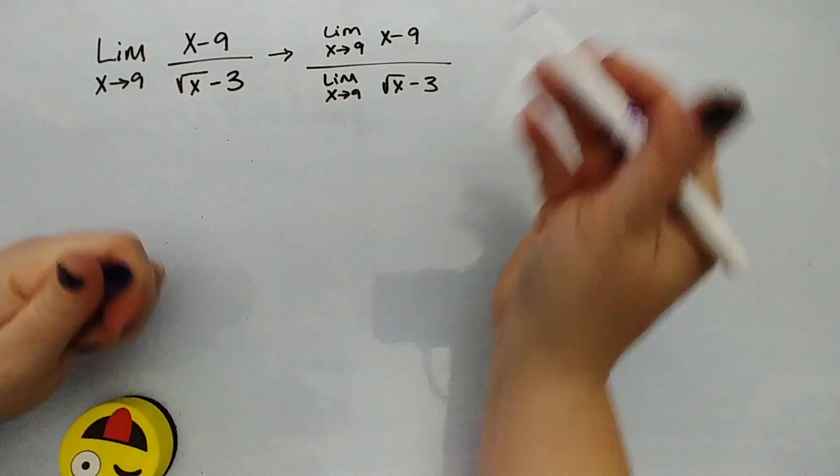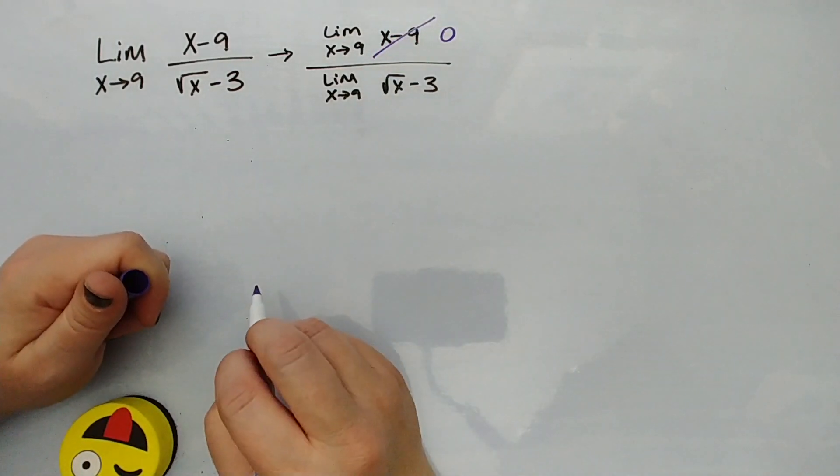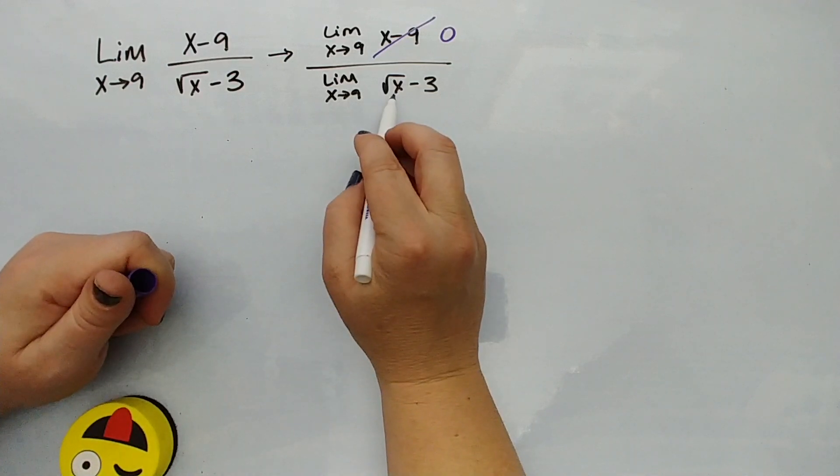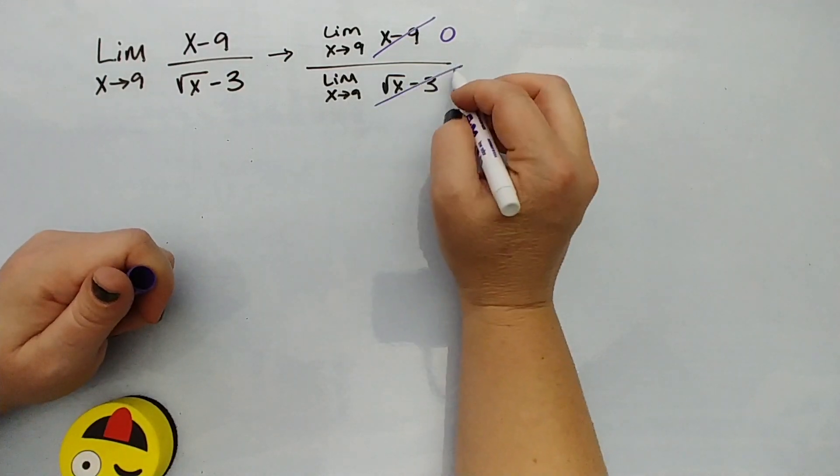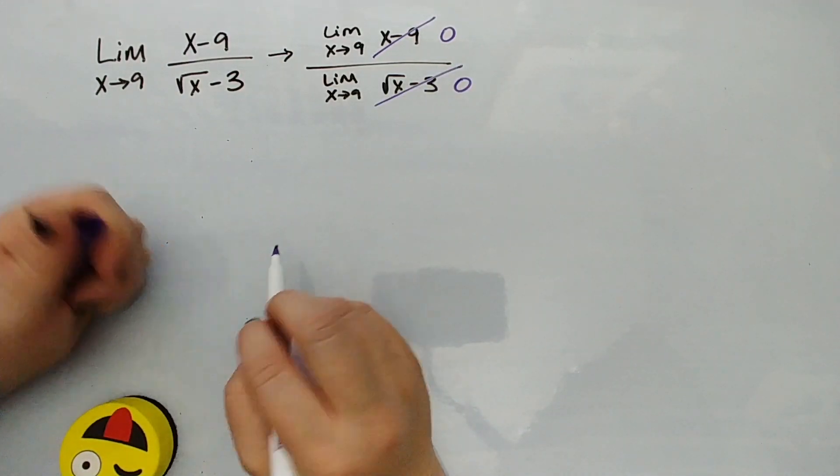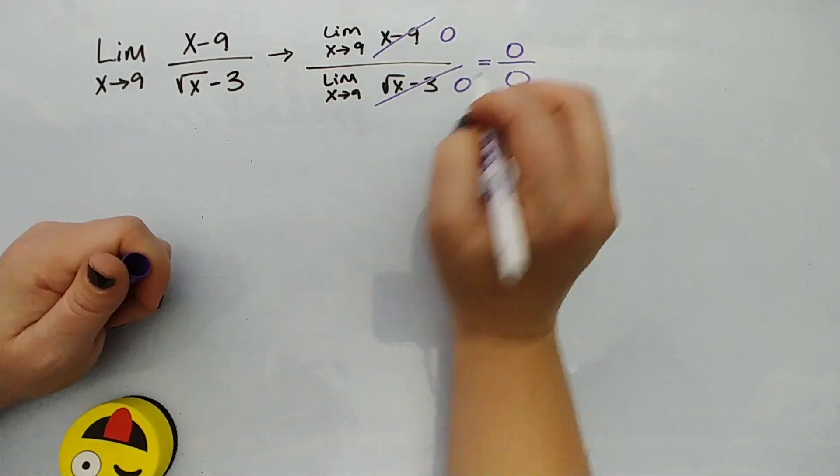Here if we get 9 minus 9, we get 0 in the numerator. Square root of 9 is 3, 3 minus 3 is 0. So now we get the interesting factor: 0 over 0.